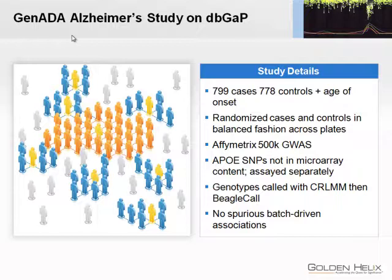This study is posted on dbGaP recently. It's a study that GlaxoSmithKline sponsored with nine or ten centers in Canada, about 1,577 samples, about half cases, half controls — Alzheimer's. They also looked at age of onset. One of those rare studies where they randomized the cases and controls on plates properly — one of the five percent that has. And so it was a 500K study, and they must have had some clinical trial statisticians who were really careful to randomize it.